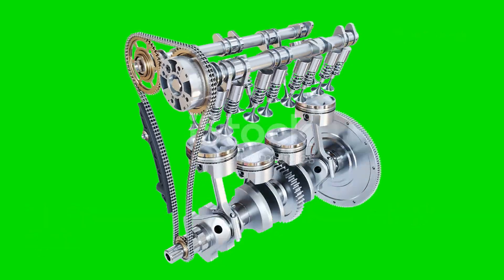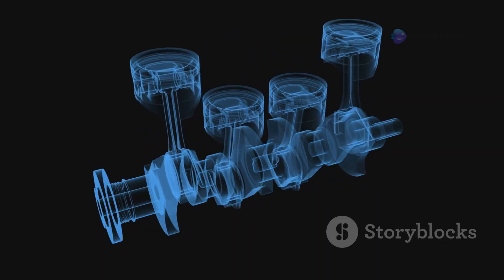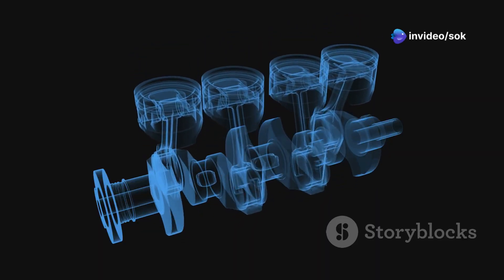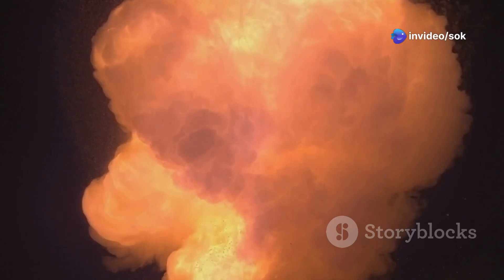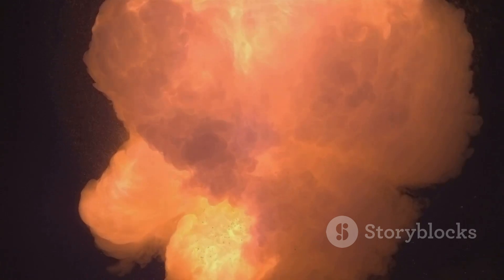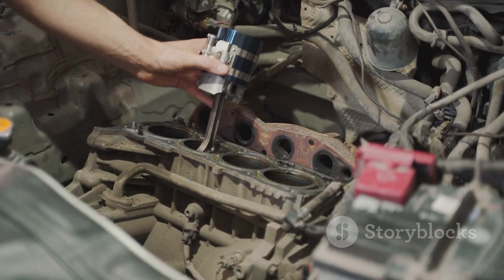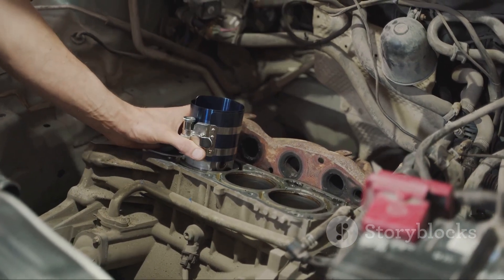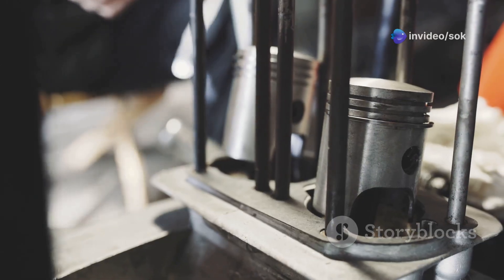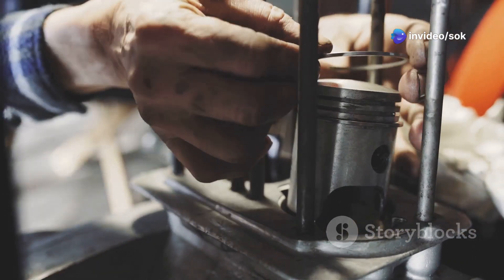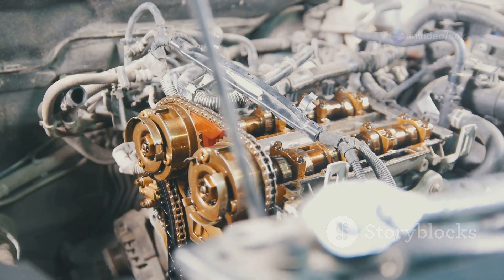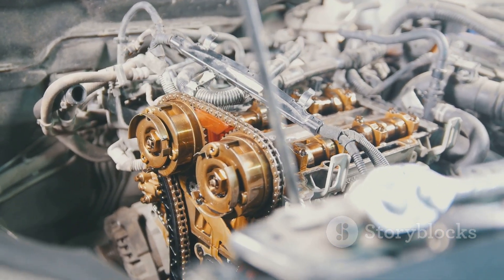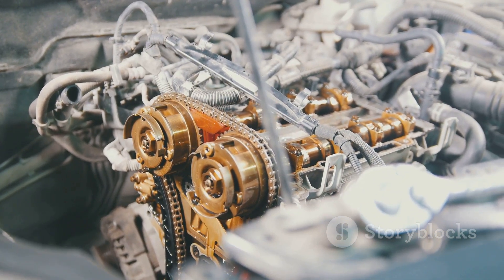A recap: the compression stroke's role in the engine cycle. The compression stroke is a vital beat in the rhythmic cycle of a four-stroke engine. It sets the stage for the powerful explosion that drives the engine's rotation, ultimately powering your vehicle. By squeezing the air-fuel mixture, the compression stroke ensures a more efficient and powerful burn, maximizing the engine's performance. Understanding the compression stroke provides a fundamental understanding of how engines generate power from a simple mix of air and fuel.